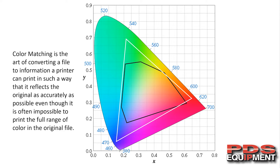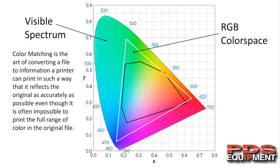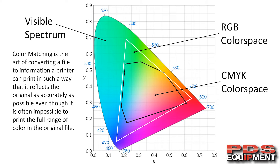Even though it's often impossible to print the full range of color in the original file. What we have here is a visible spectrum chart of color. This white triangle is your RGB color space. Your black triangle is the CMYK color space. In printing we print everything CMYK, with a few exceptions — a few spot colors and process colors. But for the most part, printing especially on UV printers is CMYK straight up. In CMYK we're dealing with a much smaller color space, so we have to take that visible spectrum and shrink it down to get it inside the CMYK color space. We basically fool the eye into thinking our color spectrum is bigger than it really is.